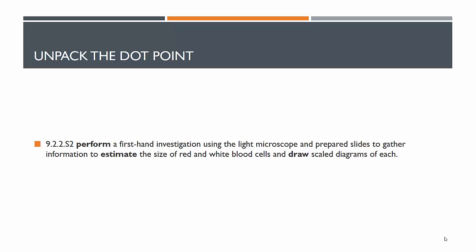Let's look at our dot point. This is one of the ones that we associate with a skill. We've got performing the investigation, which involves a whole bunch of safety aspects and whether you're using equipment technically right - just general lab stuff. Then we have estimate, which is a mathematical concept. We're going to use a technique to estimate the size of our red and white blood cells, and then we're going to hone in on another skill, which is drawing scale diagrams. It's a big video today, but I think you're going to like it.